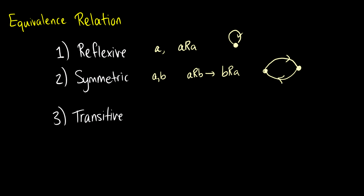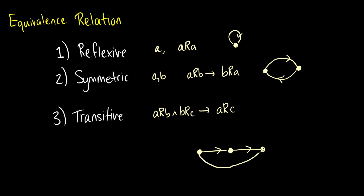Now the third one is transitive. So this means if a is related to b and b is related to c, then we're going to get that a is related to c. So we have three points here, an arrow from a to b, an arrow from b to c, therefore we're going to get this arrow from a to c.